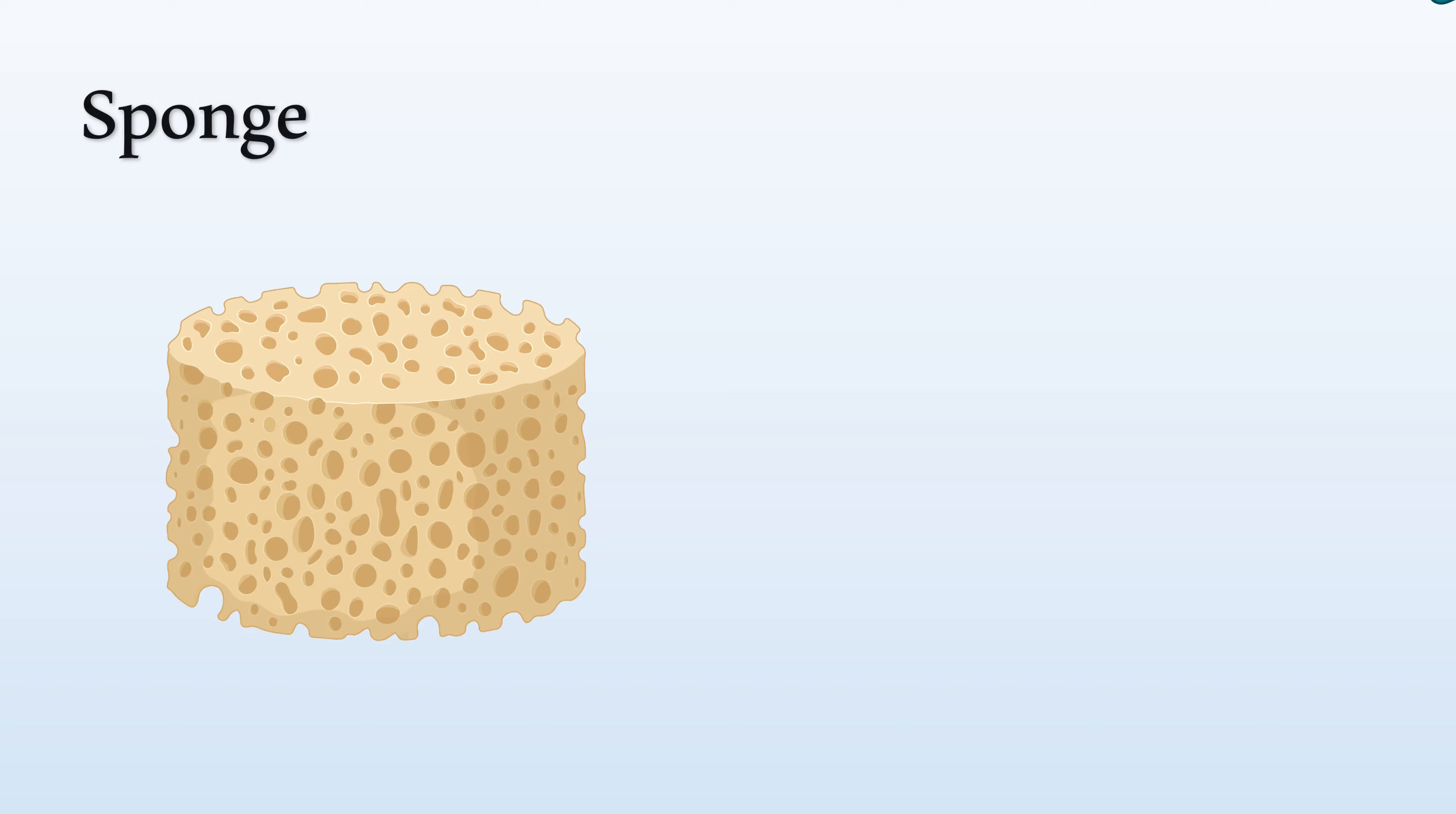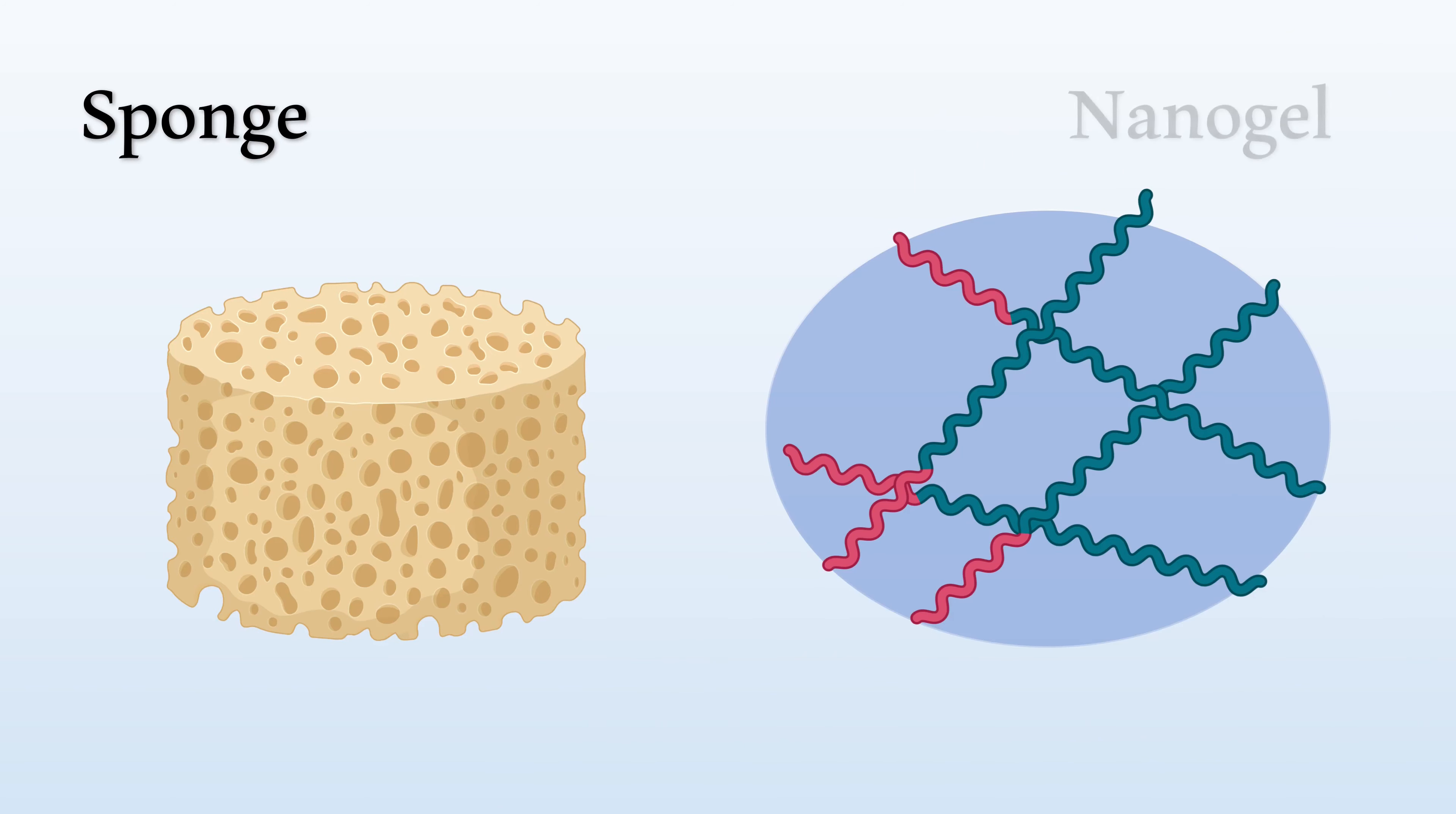In biotechnology, scientists have developed nanogels that function similarly to sponges. A nanogel is a nano-sized particle that is made up of long polymer molecules cross-linked together. These polymer molecules are like the fibers of a sponge, and the network they make up is porous.